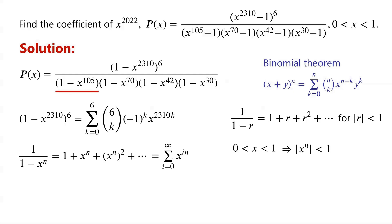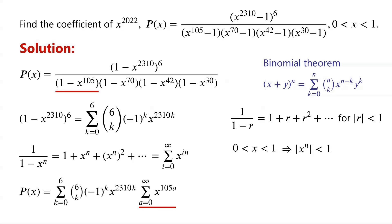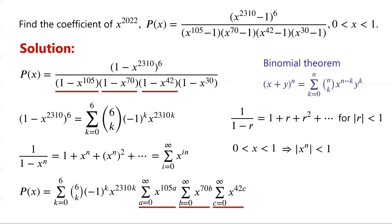So: 1 over 1 minus X to the power of 105 equals the sum from A equals 0 to infinity of X to the power of 105A. Similarly, 1 over 1 minus X to the power of 70 equals the sum from B equals 0 to infinity of X to the power of 70B. 1 over 1 minus X to the power of 42 equals the sum from C equals 0 to infinity of X to the power of 42C. And 1 over 1 minus X to the power of 30 equals the sum from D equals 0 to infinity of X to the power of 30D.